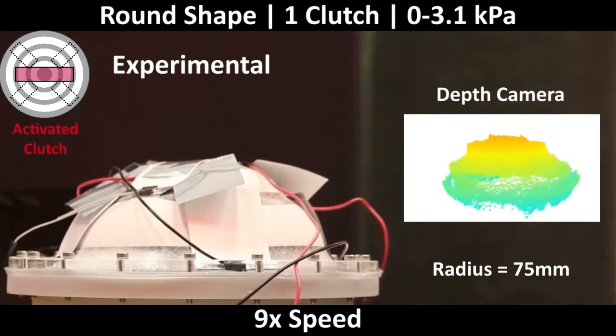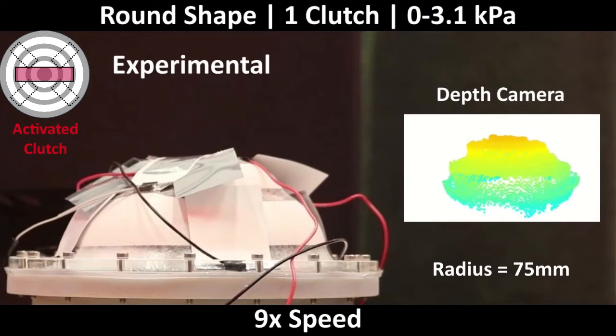With only the center clutch active, the membrane instead takes a round shape when inflated to the same internal pressure.